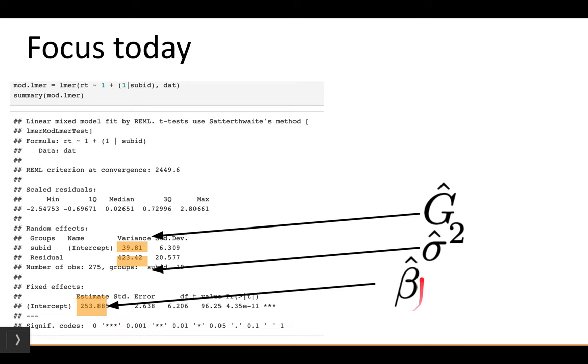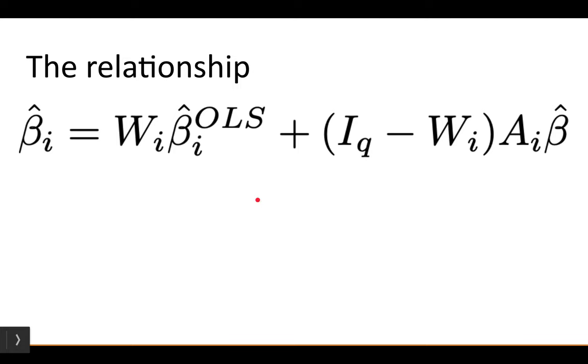Just to get some notation together, beta hat with no subscript—that's going to correspond to the fixed effects estimate from the mixed model. And then there's G hat and sigma hat squared, those are all from the mixed model. So here's the actual relationship. What I have here, let me just go from left to right. Beta hat i is going to be the conditional mode estimate. So this is explaining the relationship between the conditional mode estimate, which is beta hat i, and the OLS estimate, which in this case beta hat i OLS is just the within-subject average of reaction times.